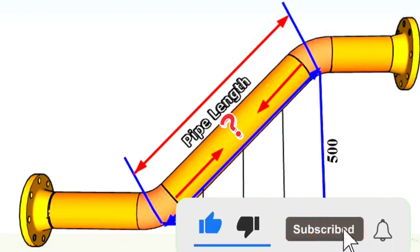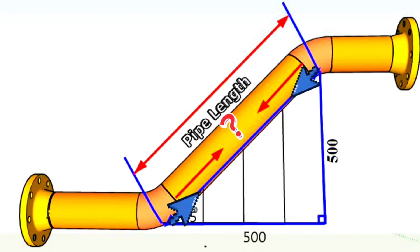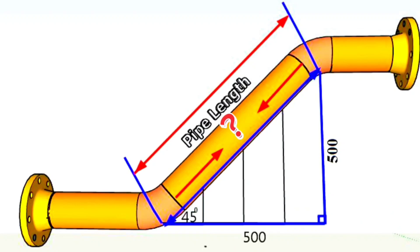A right-angle triangle with perpendicular sides of 500 mm was formed. The hypotenuse of this triangle will be equal to the distance between the elbows. Let's calculate the length of the hypotenuse of this triangle using the Pythagorean theorem. The Pythagorean theorem states that the square of the length of the hypotenuse is equal to the sum of the squares of the perpendicular sides.